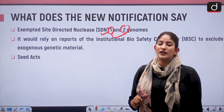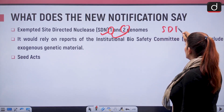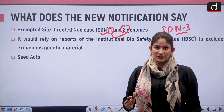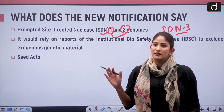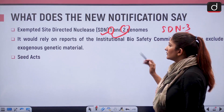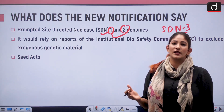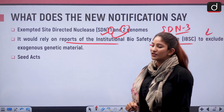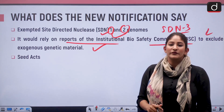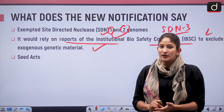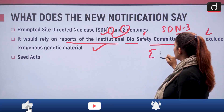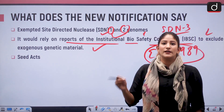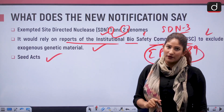SDN1 and SDN2 do not involve any foreign material. SDN3, being similar to genetically modified organisms, will come under the purview of GEAC. For genetically edited crops using SDN1 and SDN2, it will rely on reports of the Institutional Biosafety Committee to exclude exogenous genetic material. Subsequently, these will come under the Seed Acts, which fall under the Ministry of Agriculture.